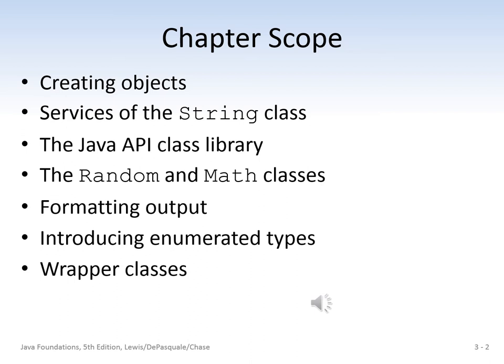Here we have a list of the main topics we're going to cover in this lecture. We're going to start with creating objects, then cover services of the String class, the Java API class library, random and math classes, some output formatting. We will introduce enumerated types — I'm still stuck in C++ where they're called enums. Wrapper classes is the last topic we'll be covering.